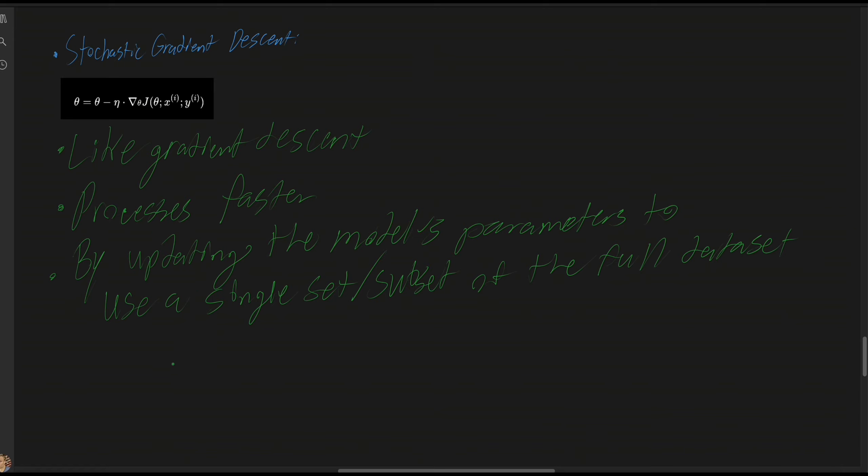Stochastic gradient descent works well when the dataset is large and redundant.